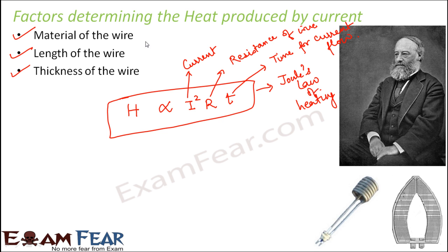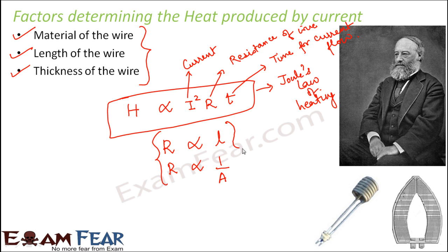Now let us see how these factors are involved in this relation. The resistance of a wire is directly proportional to the length of the wire and inversely proportional to the cross-sectional area of the wire. A wire looks like a thin cylinder — this area is known as the cross-sectional area and this is known as the length. So resistance is dependent on both length as well as cross-sectional area.